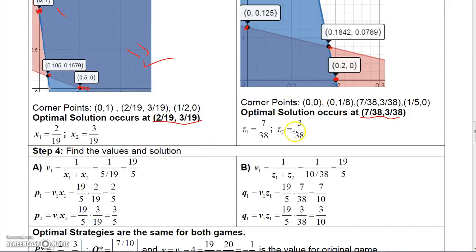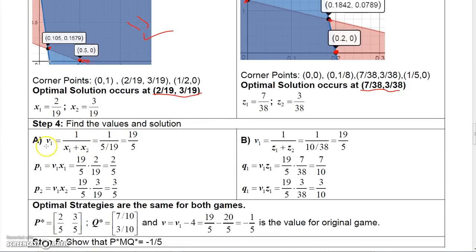Now I know X1 and X2, I know Z1 and Z2, and now we know V1 is 1 over X1 plus X2. If you add X1 and X2 together, you get 5 19ths, which 1 divided by 5 19ths is 19 5ths. So that's V1. By the way, the same thing if you did it this way with Z1 and Z2, it still comes up to 19 5ths. From the formula up here, to get P1, you take V1 times X1. V1 is 19 5ths, X1 is 2 19ths, multiply them together, and you get 2 5ths. To get P2, multiply V1 times X2 together, so 19 5ths this time, X2 is 3 19ths, and you get 3 5ths. So P1 is 2 5ths, and P2 is 3 5ths.